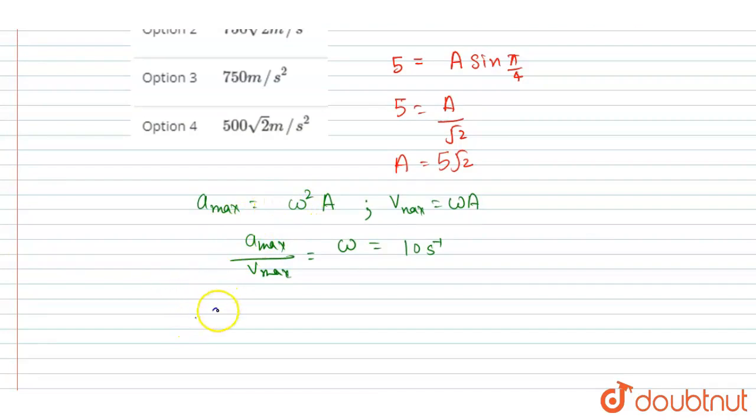So what you will get: a_max = ω²A. So ω is 10, so I will square it, and A is 5√2, so you will get 500√2. Right, acceleration maximum is this, and this is the answer.